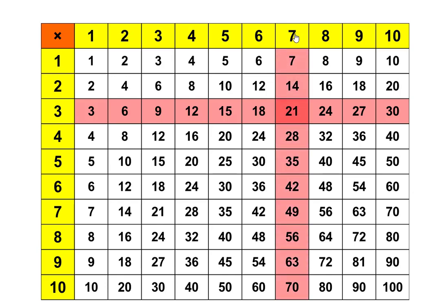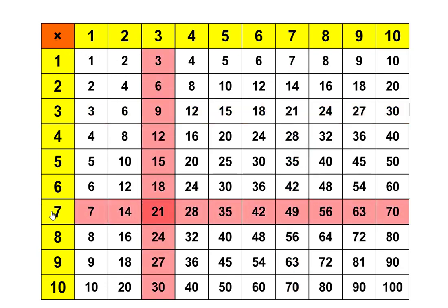Of course I can find the product 21 in another place on the chart as well. 3 times 7 is equal to 21. As I started to work with the Animated Multiplication Table, I realized some very interesting connections.